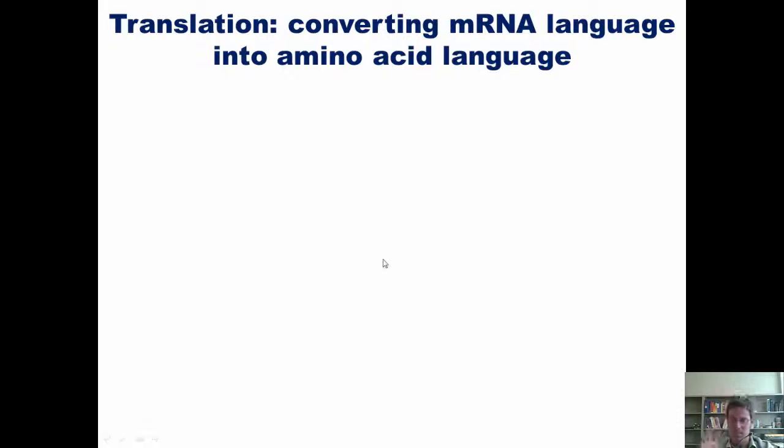So what this number means is that there are actually 64 different kinds of tRNA, one for each possible three-nucleotide-long anticodon sequence. Each of these 64 different tRNAs carries attached to the muzzle of its gun a different amino acid.